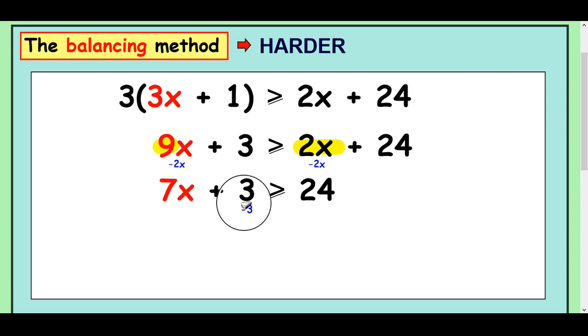If you take away 3 from both sides, then you're left with 7x is greater than or equal to 21 and then divide by 7 both sides and you get x is greater than or equal to 3.